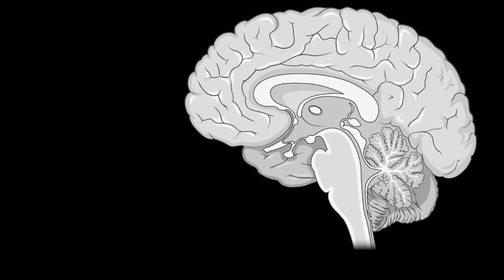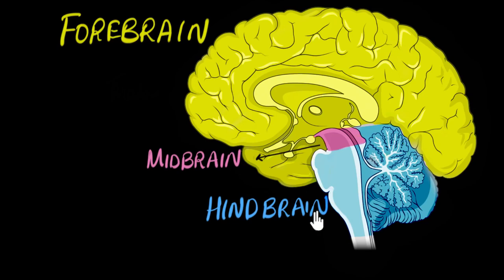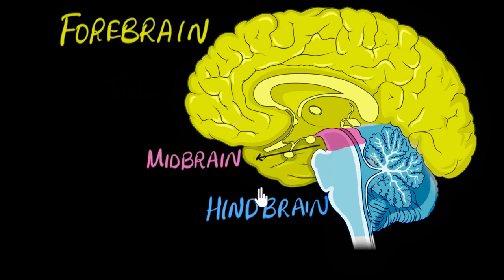We can broadly divide our brain into three parts. The forebrain, which is this big yellow section. The midbrain, which is this tiny pink section. And the hindbrain, or the lower brain, which is this blue section. Usually when we say humans have a big brain, we're talking about the forebrain. The midbrain is the beginning part of the brain stem, which connects the forebrain to the spinal cord. The hindbrain also consists of this section that looks like a mini brain all by itself, along with the remaining portion of the brain stem.